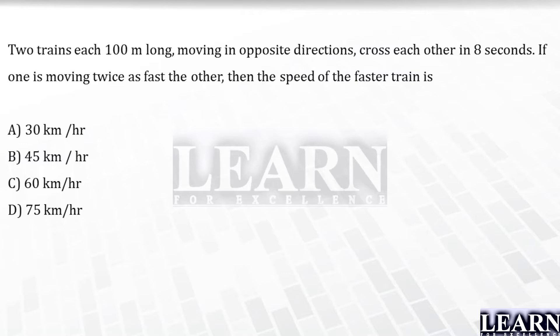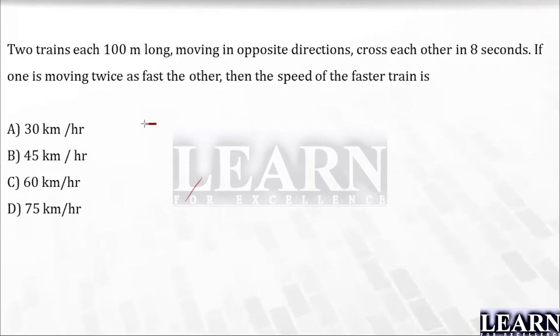Let's have a look at the question: Two trains each 100 meters long, moving in opposite directions, cross each other in 8 seconds. If one is moving twice as fast as the other, then the speed of the faster train is... Here in this question they have told that two trains are moving, their length is 100 meters long, and they are moving in opposite directions. They have not mentioned any distance between them.